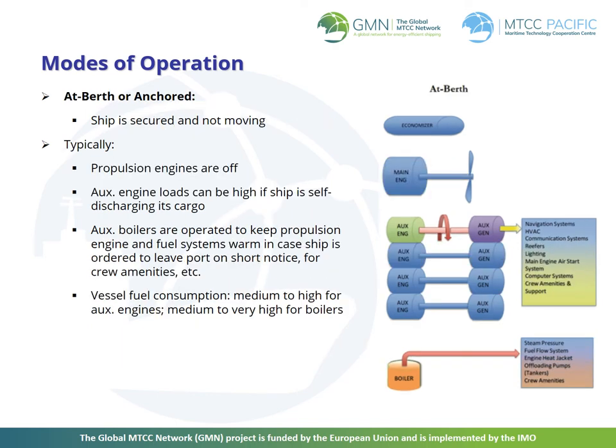At berth or anchored mode: the ship is secured and not moving. Typically, the propulsion engines are off. The auxiliary engine loads can be high if the ship is self-discharging its cargo. Auxiliary boilers are operated to keep propulsion engine and fuel systems warm in case the ship is ordered to leave port on short notice or for crew amenities and other reasons. Vessel fuel consumption is medium to high for auxiliary engines and medium to very high for boilers.